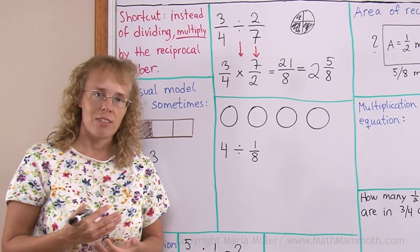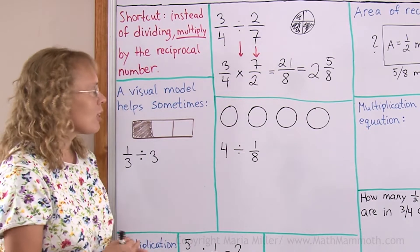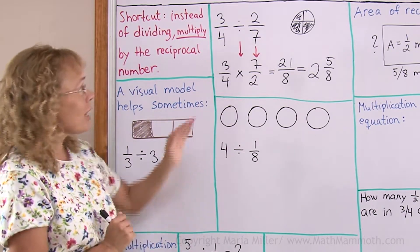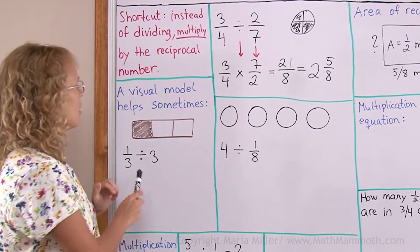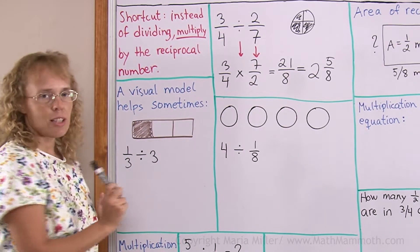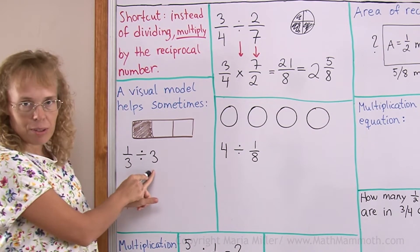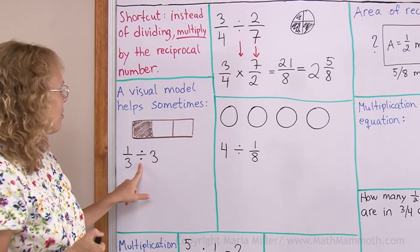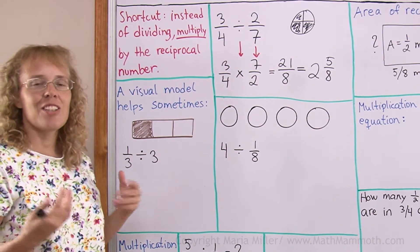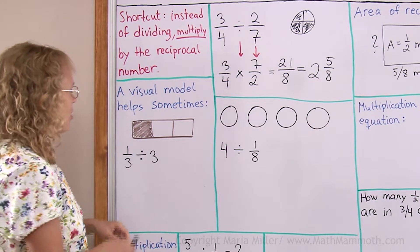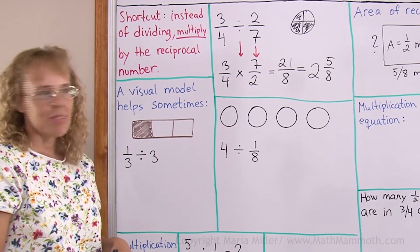Sometimes we can solve fraction division problems using a visual model or just thinking logically without using that shortcut. For example, if you have 1/3 of a chocolate bar left, you're going to share it between 3 people. Remember, division by a whole number you can think of it as sharing. So how much will each one get?